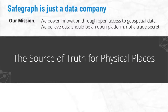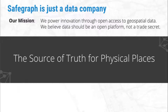We think of SafeGraph as the source of truth for physical places. We build data sets about points of interest, or physical places, and we're 100% focused on making those data sets as completely accurate as possible. Today our data set covers over 6 million points of interest in the U.S. and Canada. We're primarily focused on all the commercial businesses where consumers can physically go and spend money or spend time — restaurants, retail shops, grocery stores, movie theaters, hotels, airports, parks, hardware stores, nail salons, bars — all these places where a consumer can physically go.